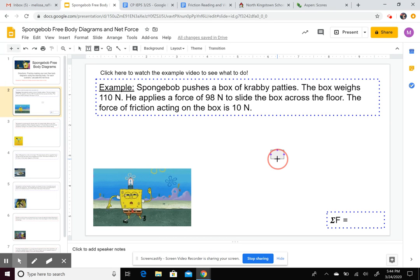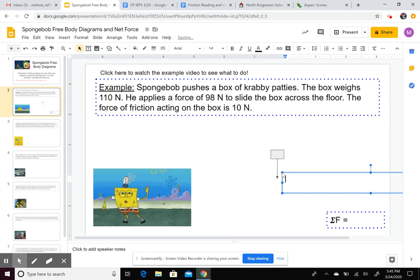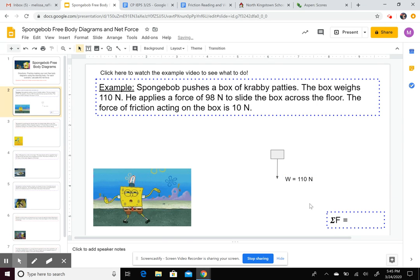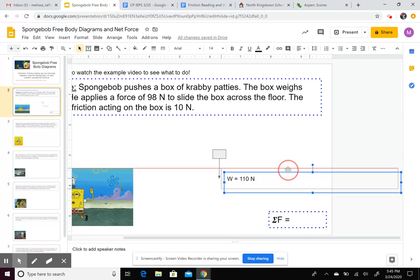So the first force that's given to us is weight. Weight is the pull of gravity on the object. So your weight always pulls you down towards the center of the earth. So it's a downward force like that. And then you're going to use a text box to label it. So this is the force of weight. We use just a big W to represent weight, and it's 110 Newtons. Put it right next to that arrow there.